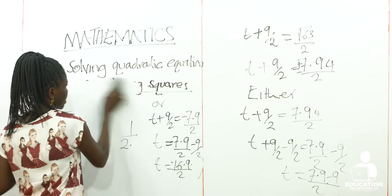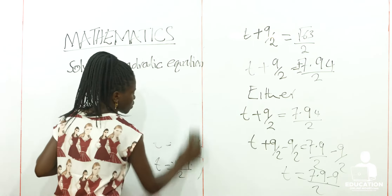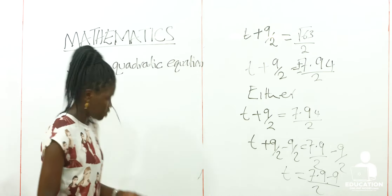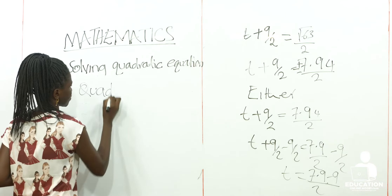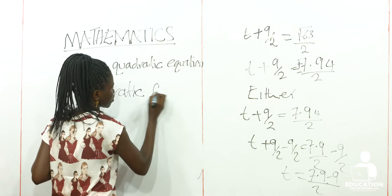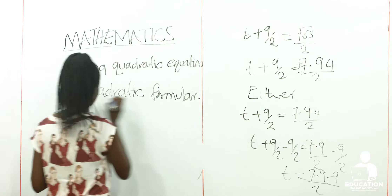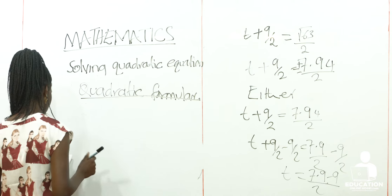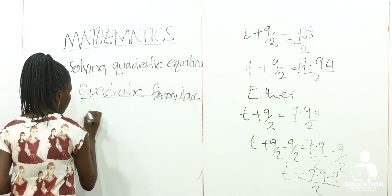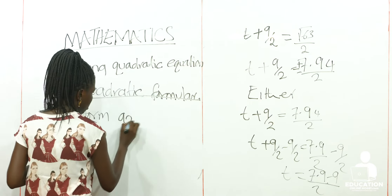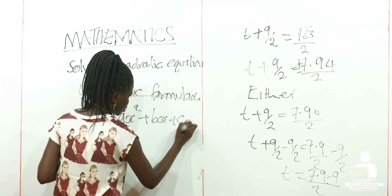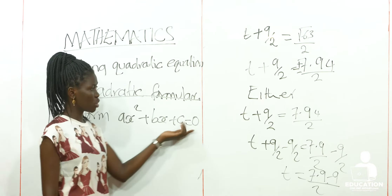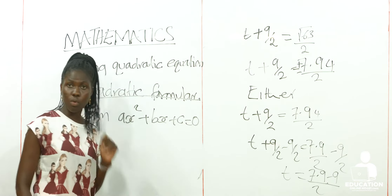So we are going to go to the next method of solving quadratic equations, which is the use of the quadratic formula. The formula is applied to the form AX² + BX + C = 0. Initially, we know that this is our quadratic expression for the quadratic equation. When this expression is equal to 0, we know we are solving a quadratic equation. But in this case, we are going to use the formula.